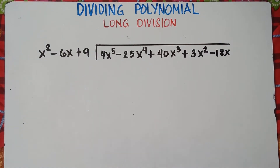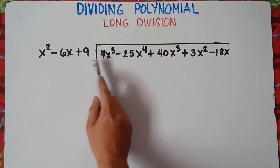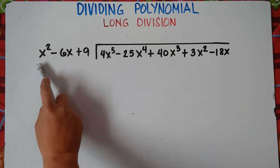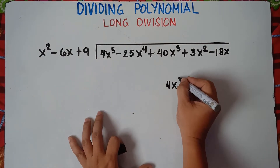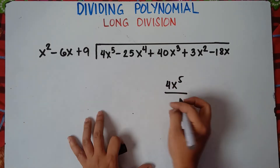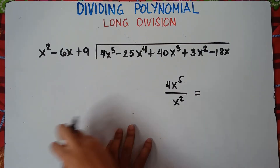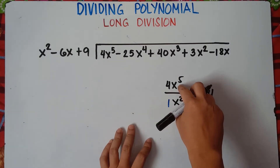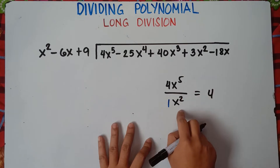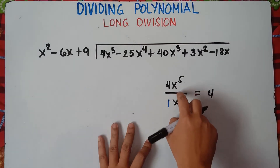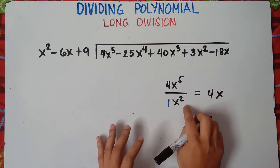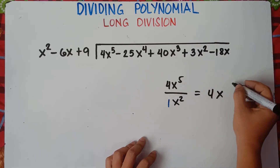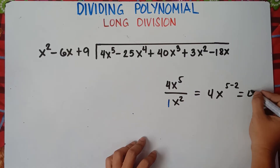So let's divide now. To divide the polynomial, you divide the leading term of the dividend by the first term of the divisor. That would be 4x raised to the power of 5 divided by x squared. So 4 divided by 1 is 4. For x raised to the power of 5 divided by x squared — when you divide variables, you copy the base x and subtract the exponents: 5 minus 2, giving us 4x cubed.